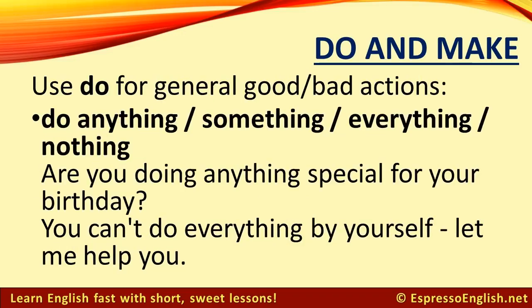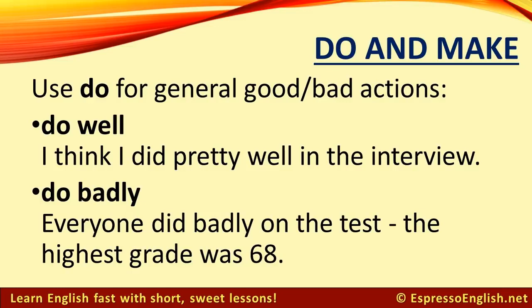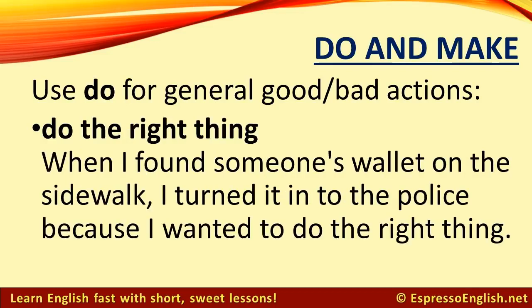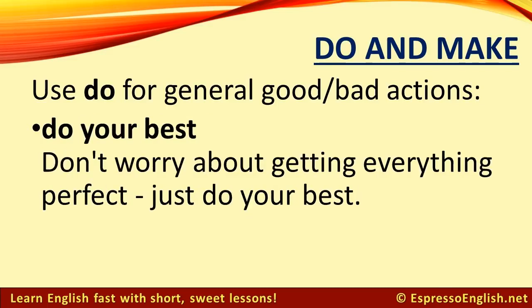Use do for general good or bad actions: do anything, do something, do everything, do nothing. Are you doing anything special for your birthday? You can't do everything by yourself, let me help you. Do well — I think I did pretty well in the interview. Do badly — everyone did badly on the test, the highest grade was 68. Do good — the non-profit organization has done a lot of good in the community. Do the right thing — when I found someone's wallet on the sidewalk, I turned it in to the police because I wanted to do the right thing. Do your best — don't worry about getting everything perfect, just do your best.